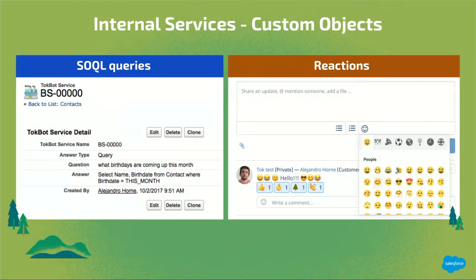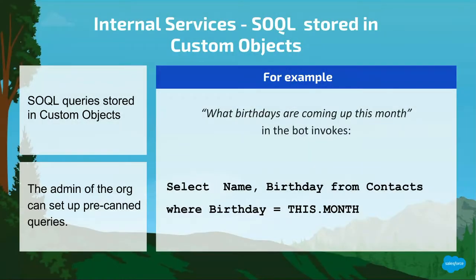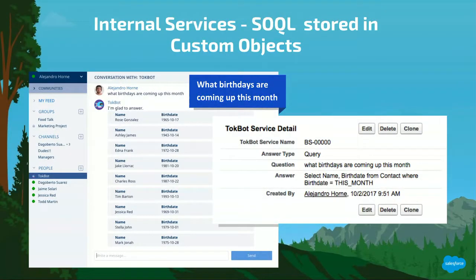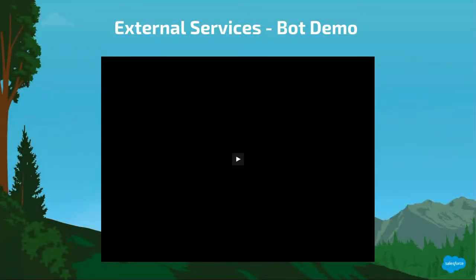We're also going to go over a couple of internal services integrated into Chatter. The first is SOQL queries — basically custom SOQL queries stored in an object. It's a pairing between the invocation and the query itself. In this example on screen, the invocation would be 'what birthdays are coming up this month,' which triggers the execution of the query: SELECT Name, Birthday FROM Contact WHERE Birthday = THIS_MONTH. Here's a screenshot of what that invocation looks like, and on the right-hand side you can see what the custom object deployed here would look like. Here's a quick demo on how that works.